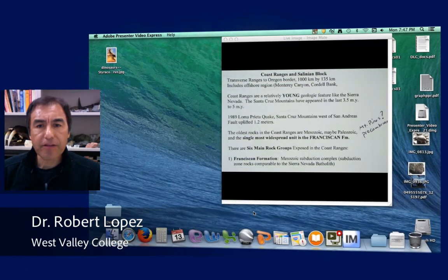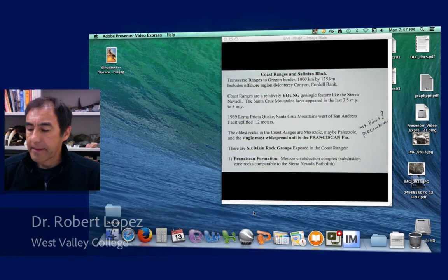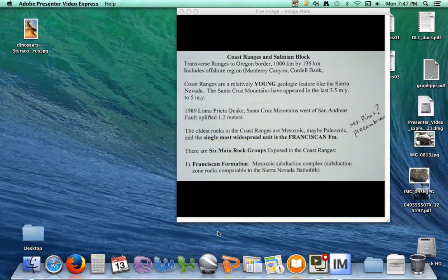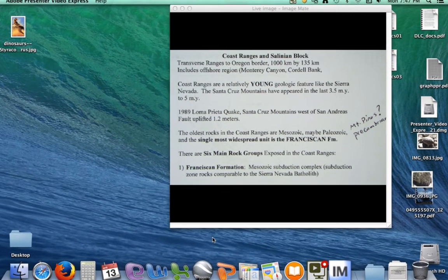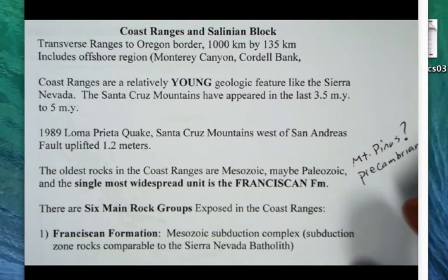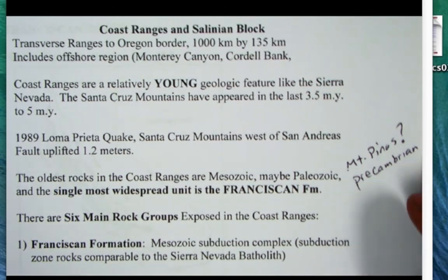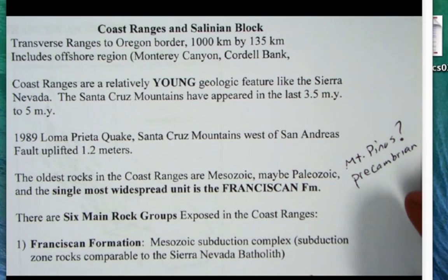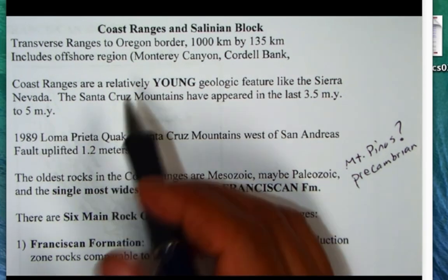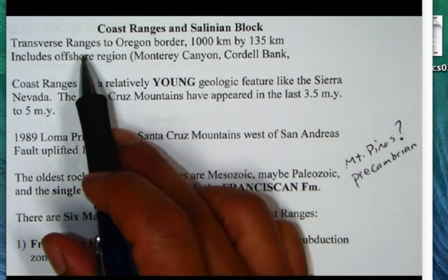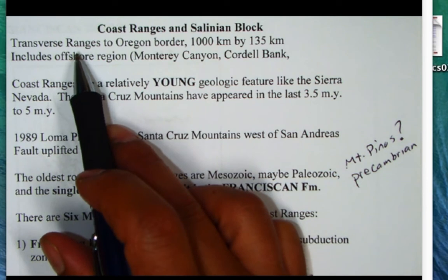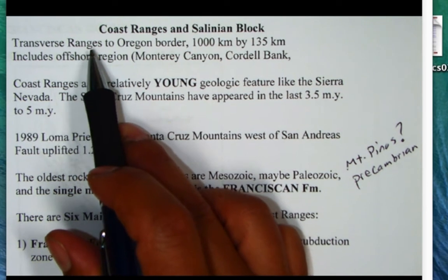Hello and welcome back to California Geology. Today I want to introduce the Coast Ranges here in California and also the Salinian Block. The Coast Ranges extend basically from the Oregon border down to the Transverse Ranges in Southern California.